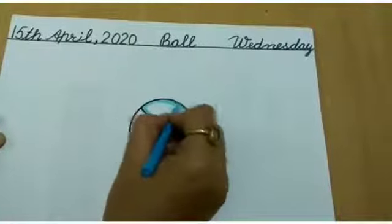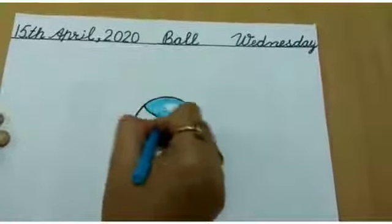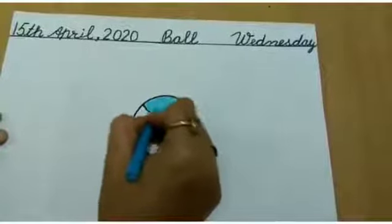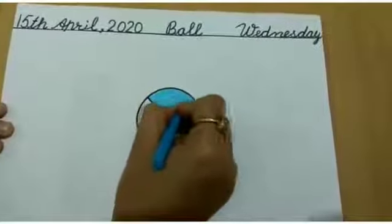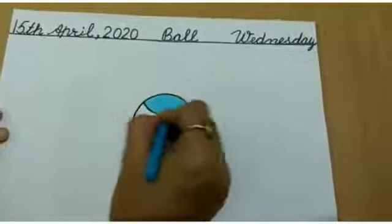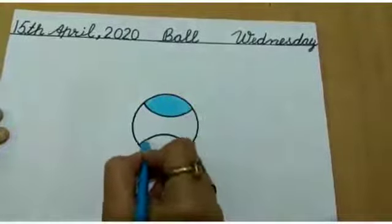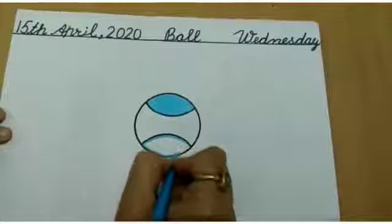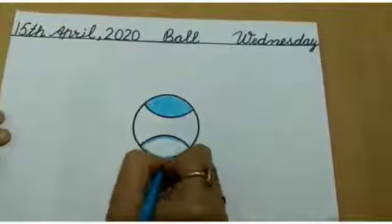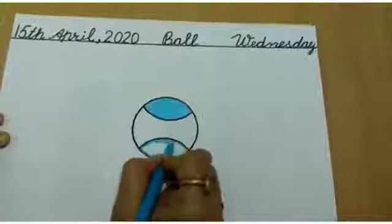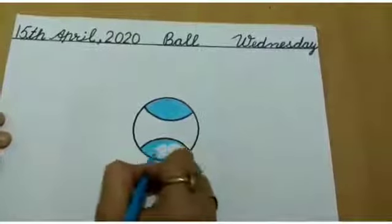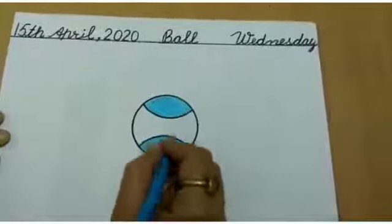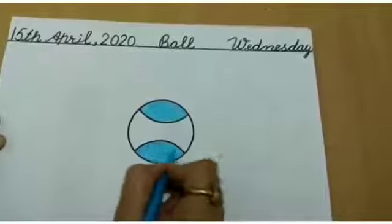Do coloring side to side, or in the same direction as I am doing. You have to follow the same direction. After coloring here, color here. Again we will do coloring in the boundaries, then do coloring side to side and in the same direction.